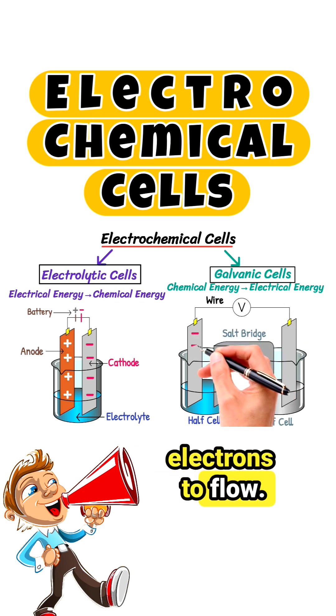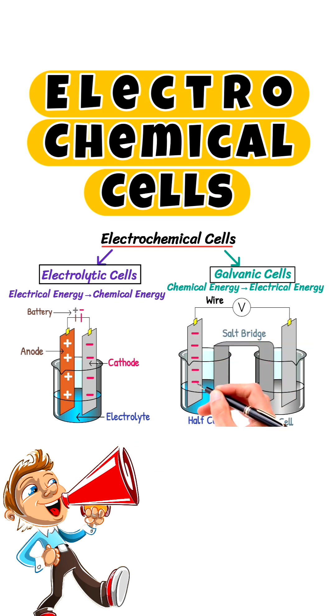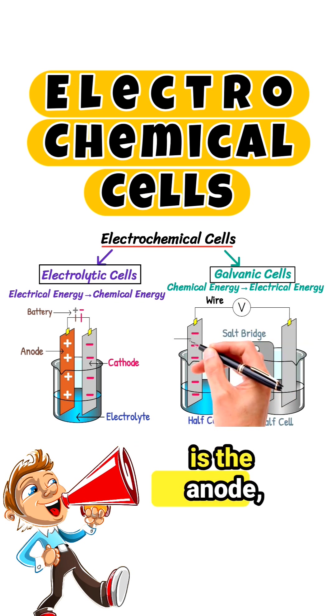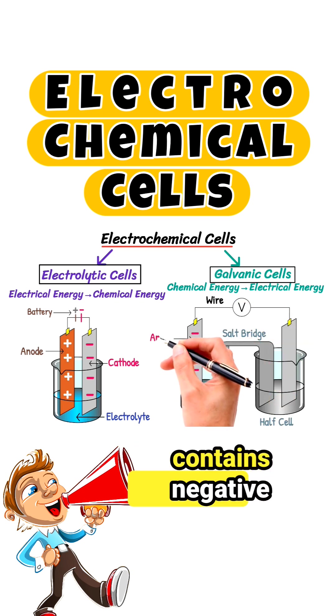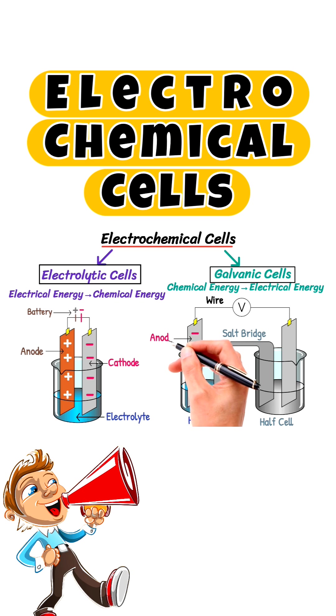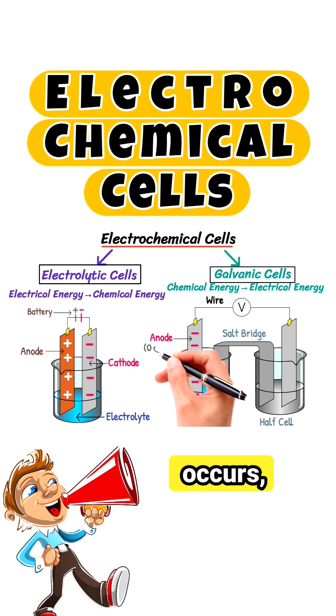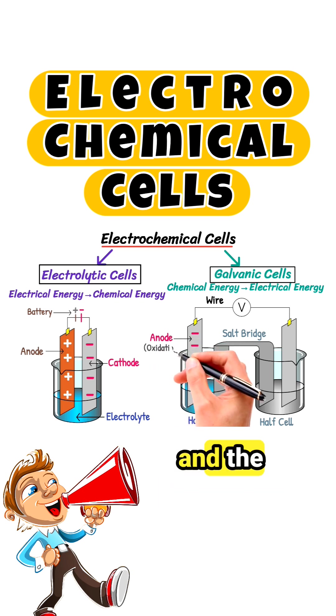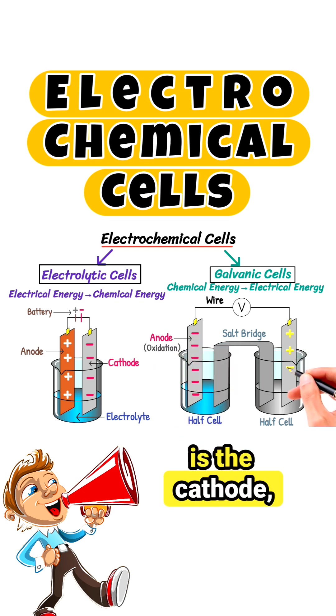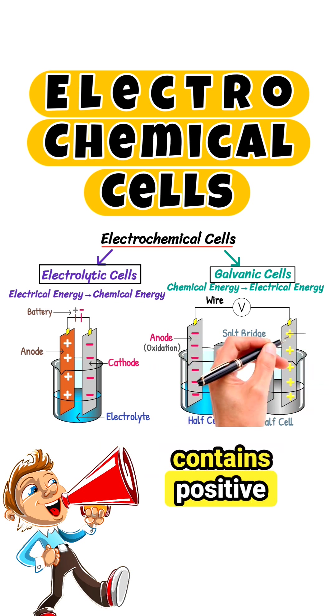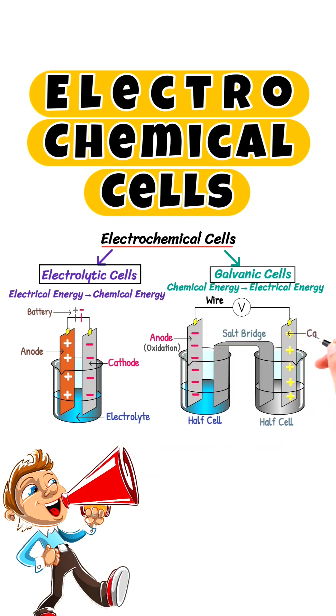One electrode is the anode, which contains negative charge, where oxidation occurs. The other is the cathode, which contains positive charge, where reduction occurs.